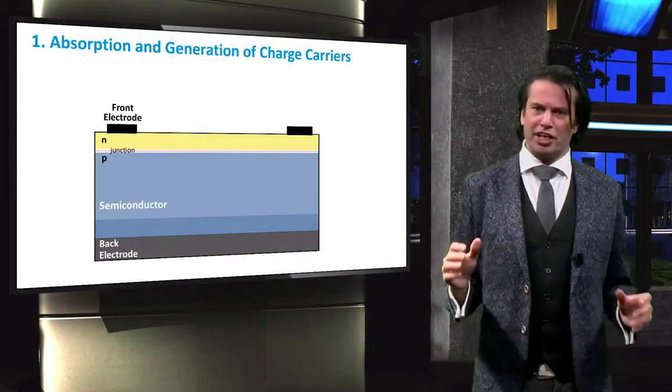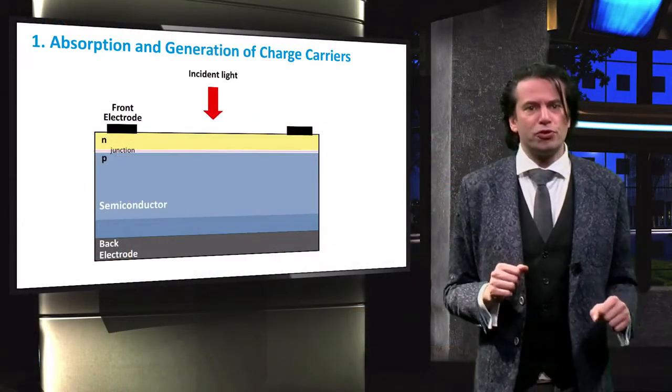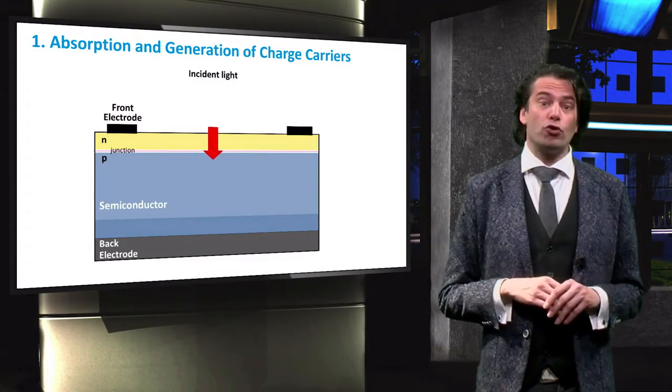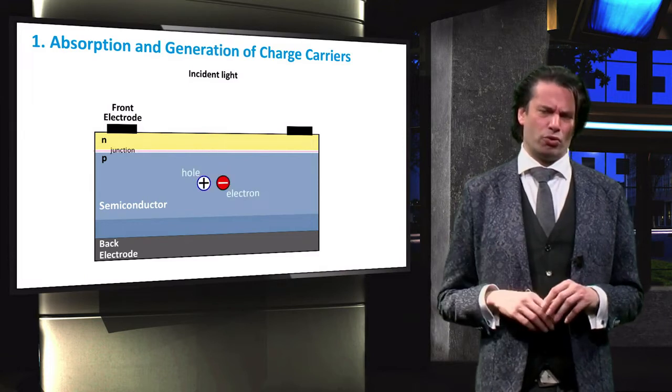The first process involves the absorption of photons in the materials that form a junction. So in here is a single photon of light incident on the solar cell.